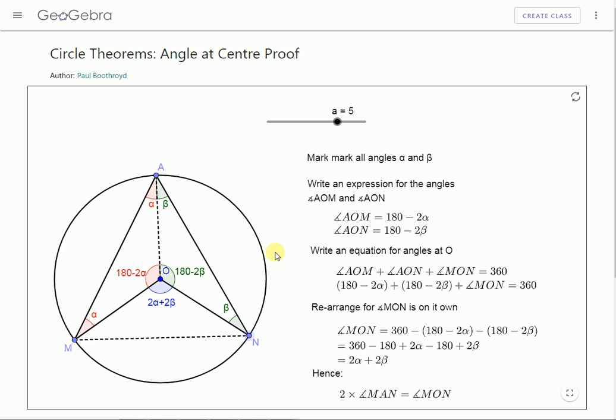The third one. It doesn't matter where this point A is in this opposite segment. The relationship still holds. This angle at the center hasn't changed. So the angle out here is still the same sum. Alpha and beta change size but the angle itself MAN stays the same.